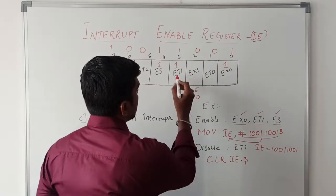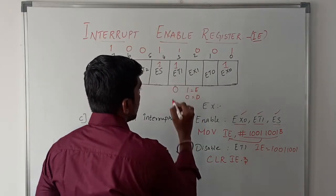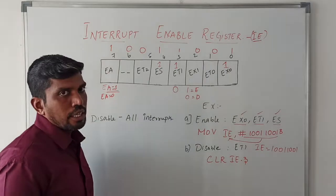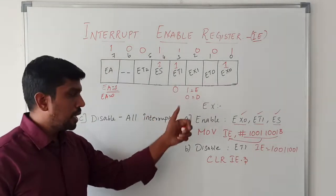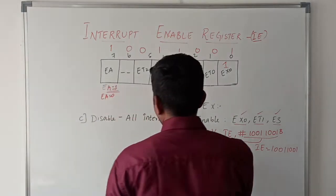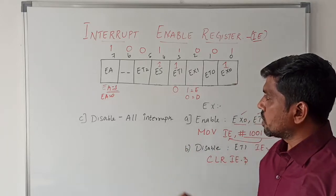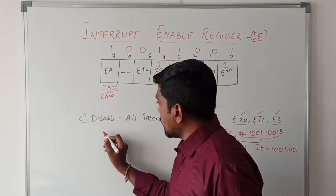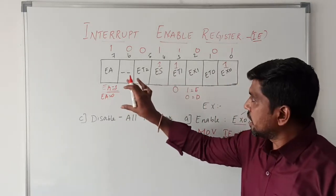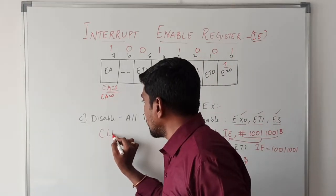After execution of this instruction, the third bit value goes to 0, just clearing the ET1, so timer 1 interrupt is disabled. Third example: disable all the interrupts.